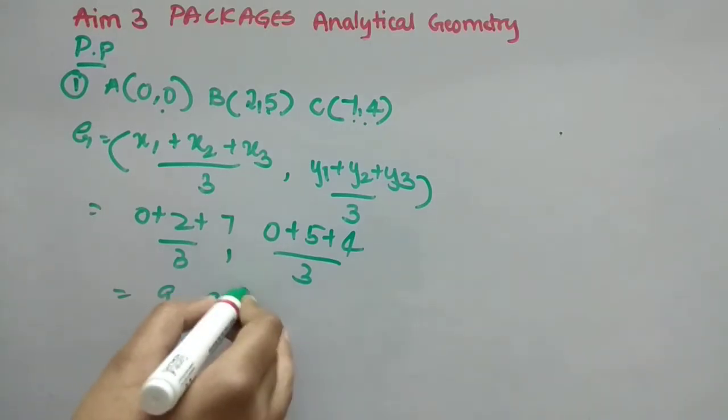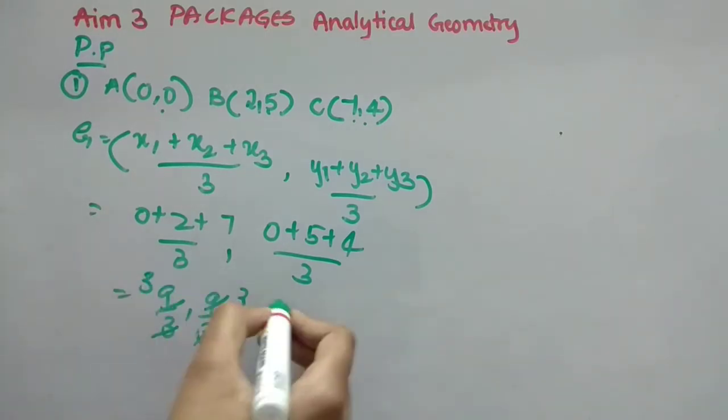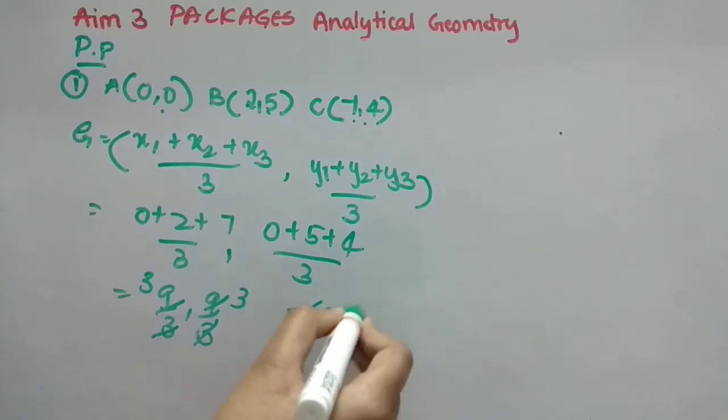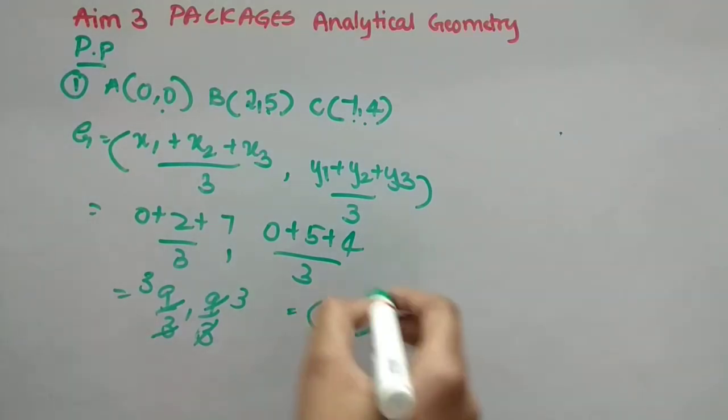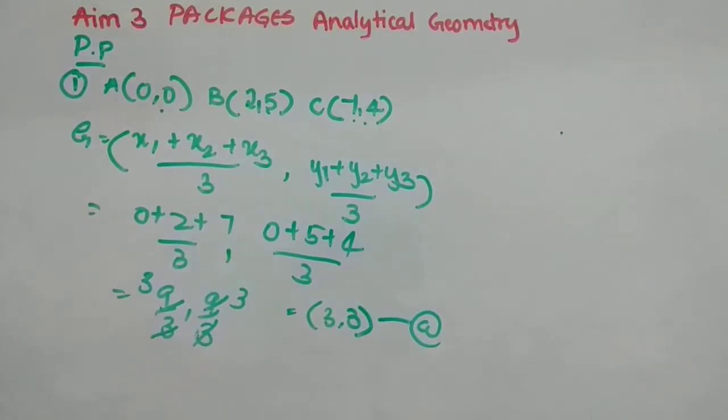So 2 plus 7 is 9, 9 by 3, 5 plus 4 is 9, 9 by 3. So 3 threes are, so answer is (3,3). You will get it as option A. So completed first one, now we will see second.